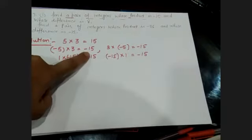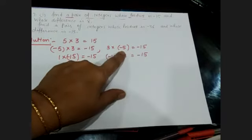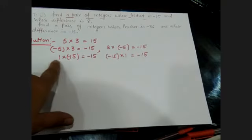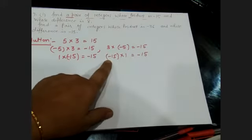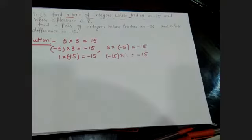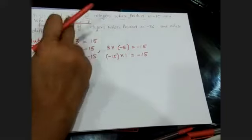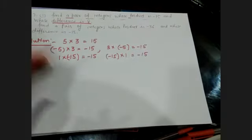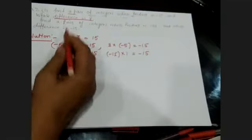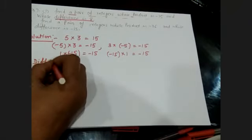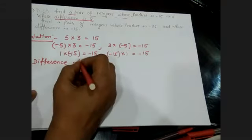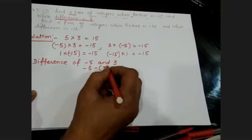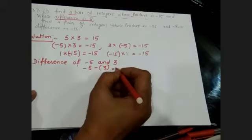The pairs whose product is minus 15: minus 5 multiplied by 3 equals minus 15, and 3 multiplied by minus 5. When we multiply these two integers their product is minus 15. Also 1 into minus 15 and minus 15 into 1. But I also need to find which pair has difference equal to 8. The difference of minus 5 and 3: that is 3 minus minus 5, which equals 3 plus 5, equal to 8.